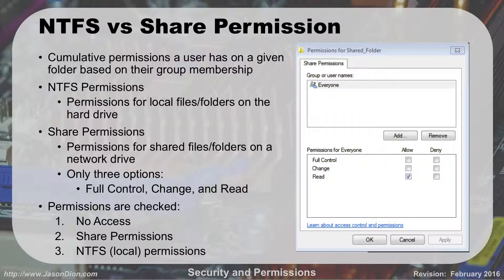NTFS versus share drive permissions: there are two types of permissions we use for files and folders on Windows systems, and we look at the cumulative permissions of both to figure out what permissions a user actually has. NTFS permissions are for local files and folders on the hard drive. Share permissions are for shared files or folders on a network drive and have only three broad options: full control (read, write, and delete plus the ability to change permissions for other users), change control (read, write, and delete the file itself), or read control (read only).